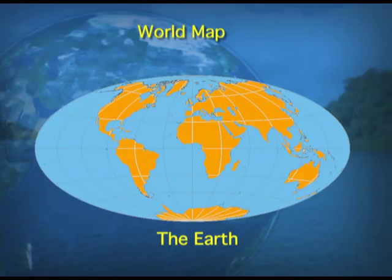Now if we have a look at the world map, you can see almost 29% of the surface of the earth is covered with continents. Now the position of the continents and the ocean bodies as we see them today in the map has not been there in the past.